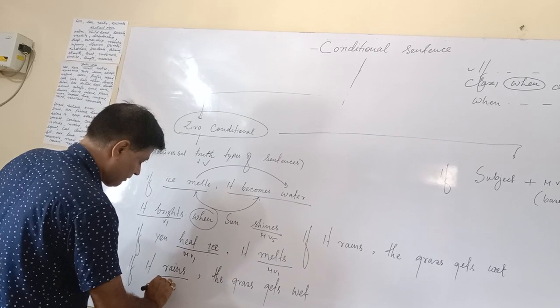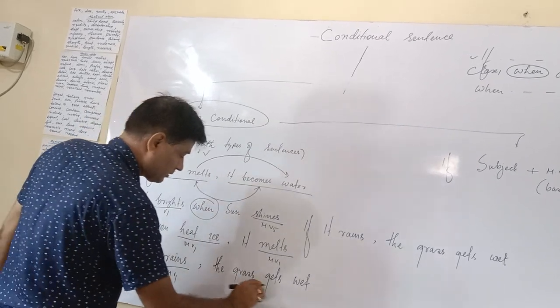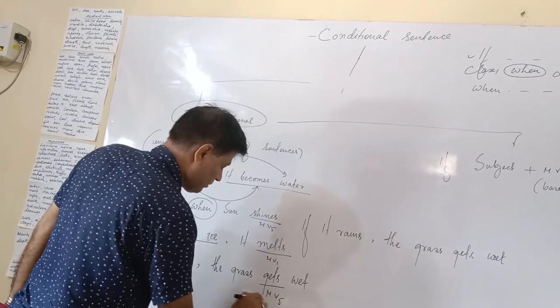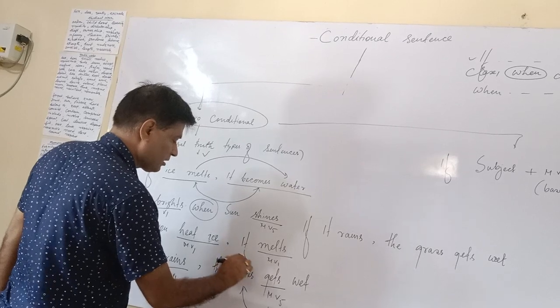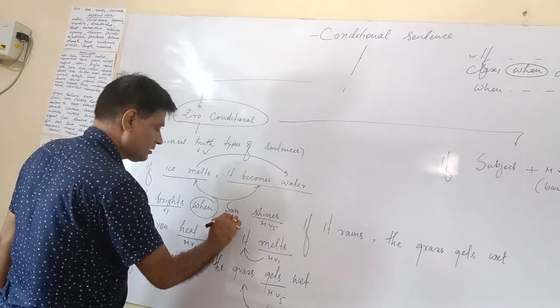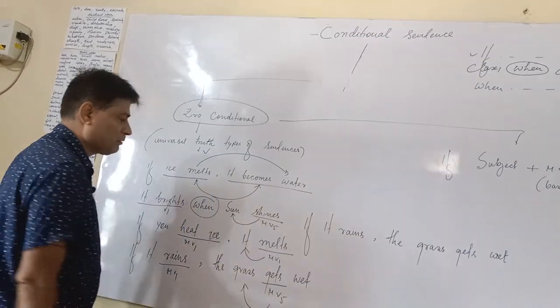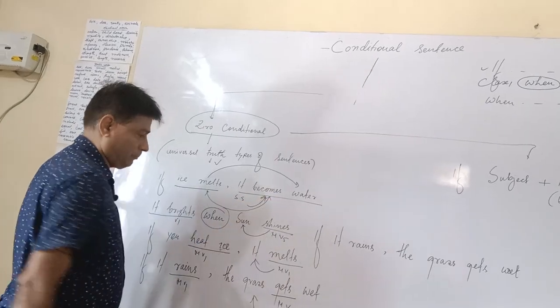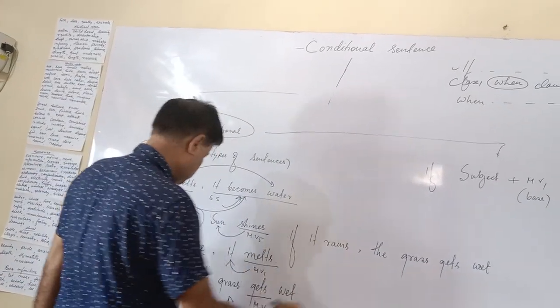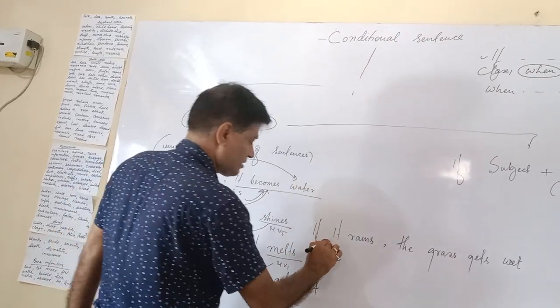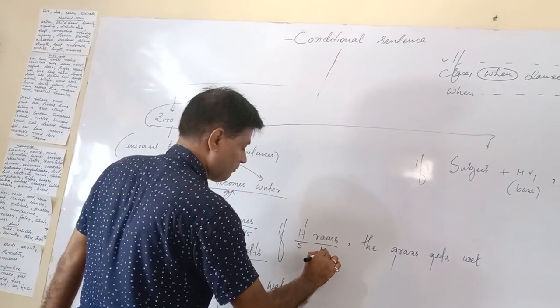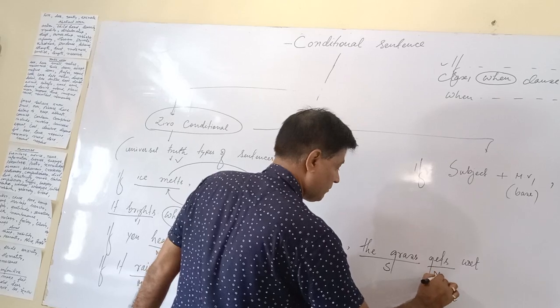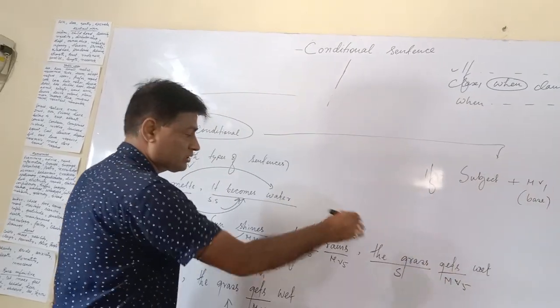If it rains, main verb one, subject, main verb one, the grass gets wet. Singular subject, singular verb. Here sun, singular subject, and verb also singular one. It's singular subject and verb singular one. If it rains, subject, main verb, singular form, the grass subject and gets, main verb, singular subject, singular verb.